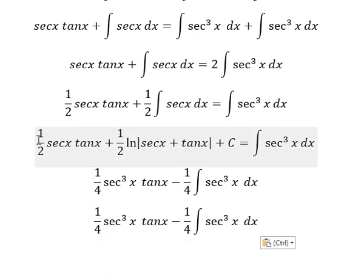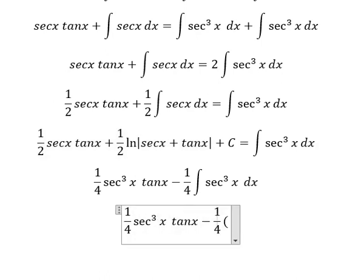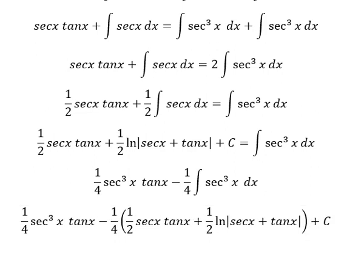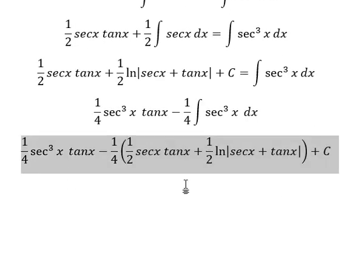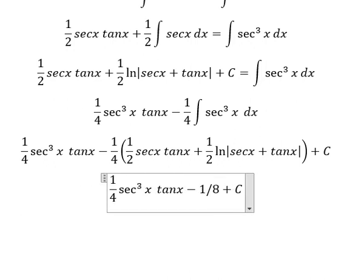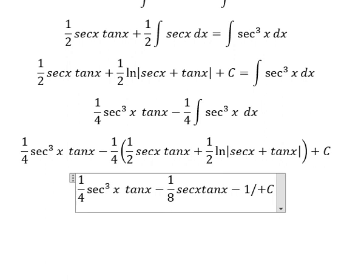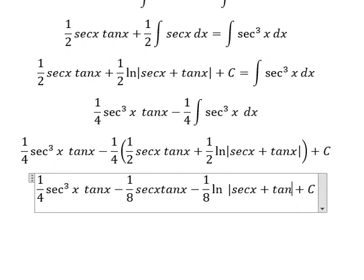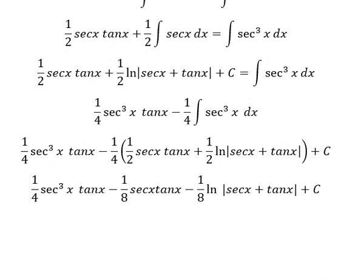And we add the constant C. Now let's go back to this expression. Substituting this integration result, and we have the negative 1 over 4 multiplied by 1 over 2. So we have a final answer: that's 1 over 8 times secant x · tan x minus 1 over 8 times ln of the absolute value of secant x plus tan x. This is the end, thank you for watching.